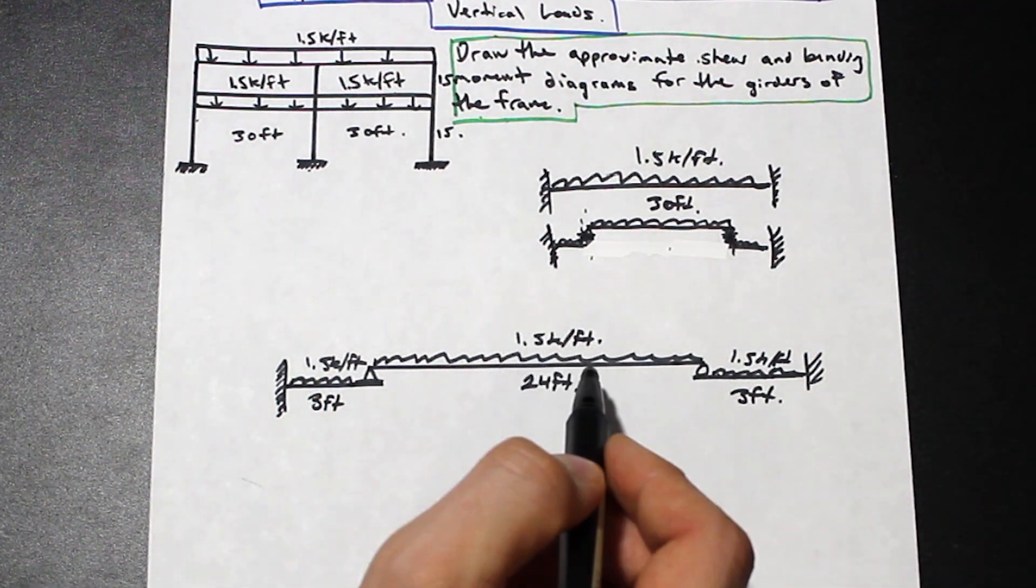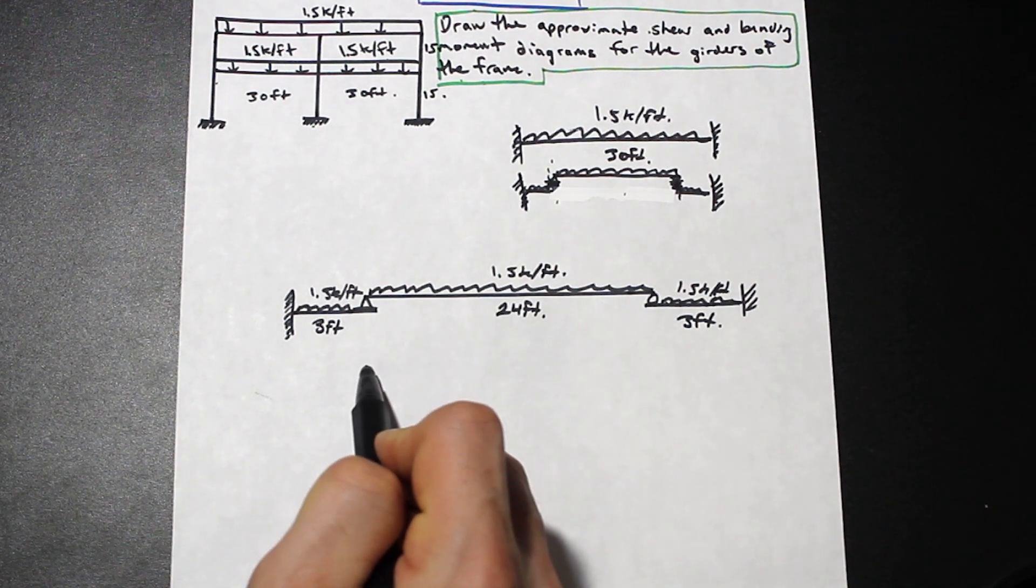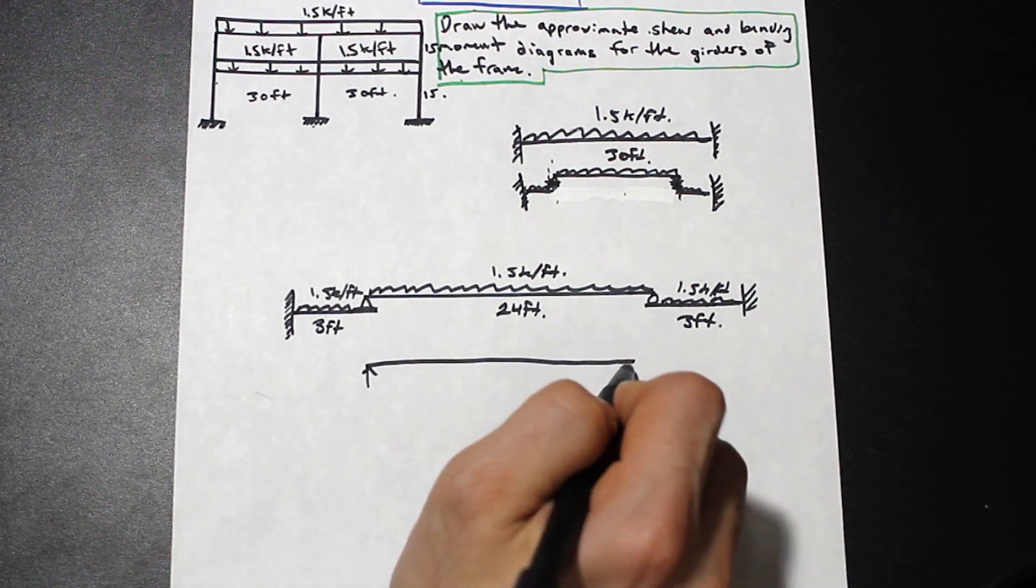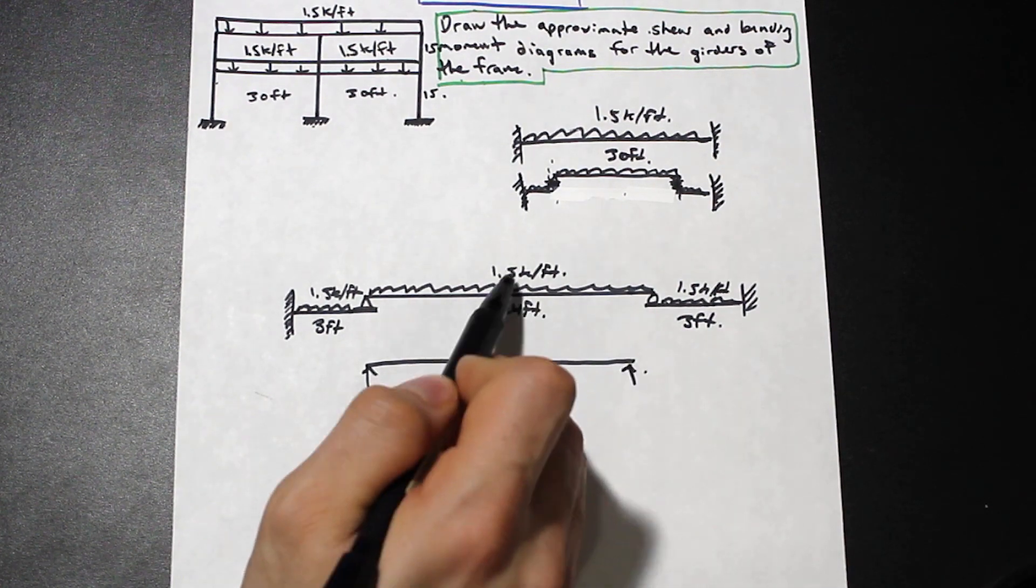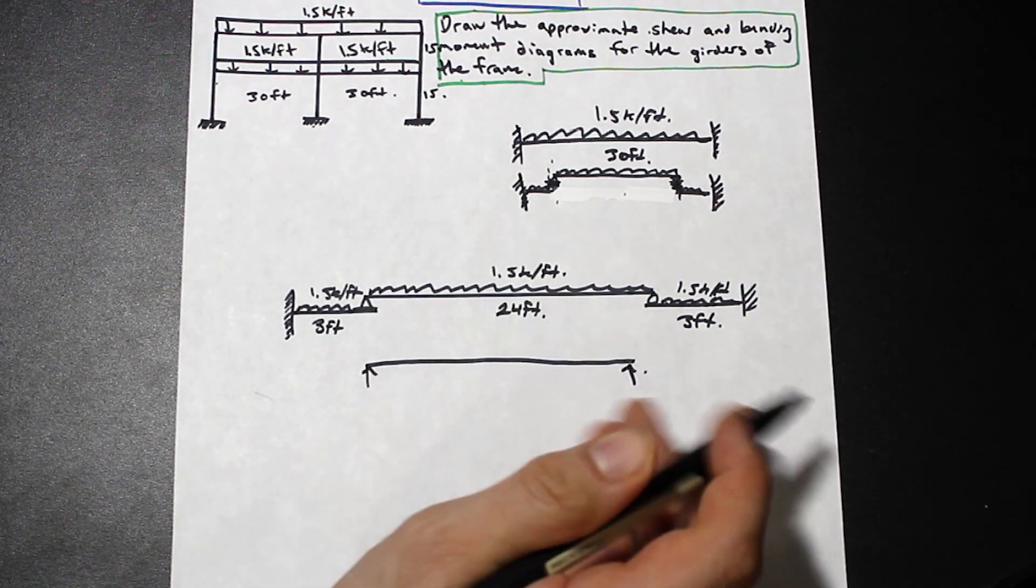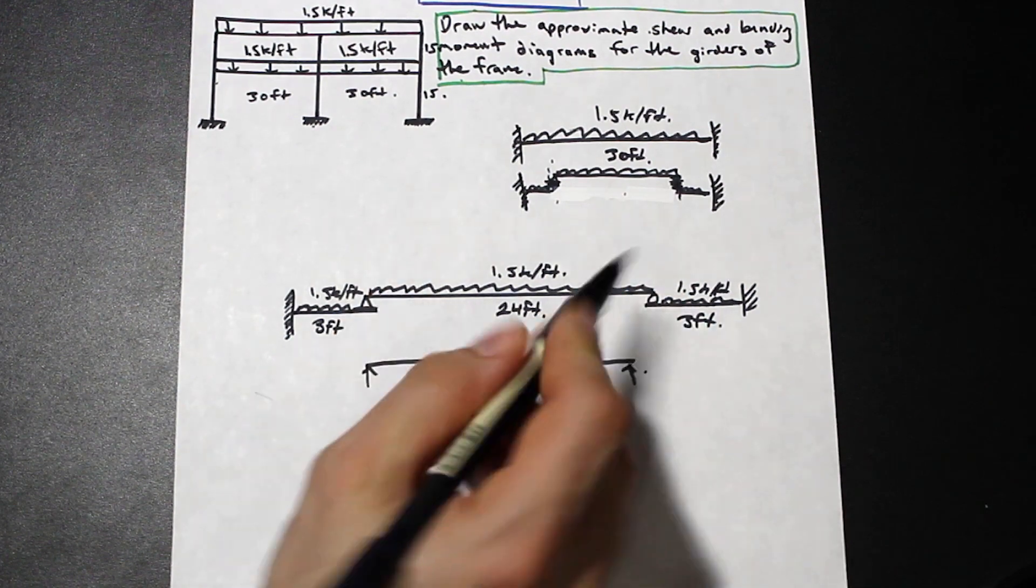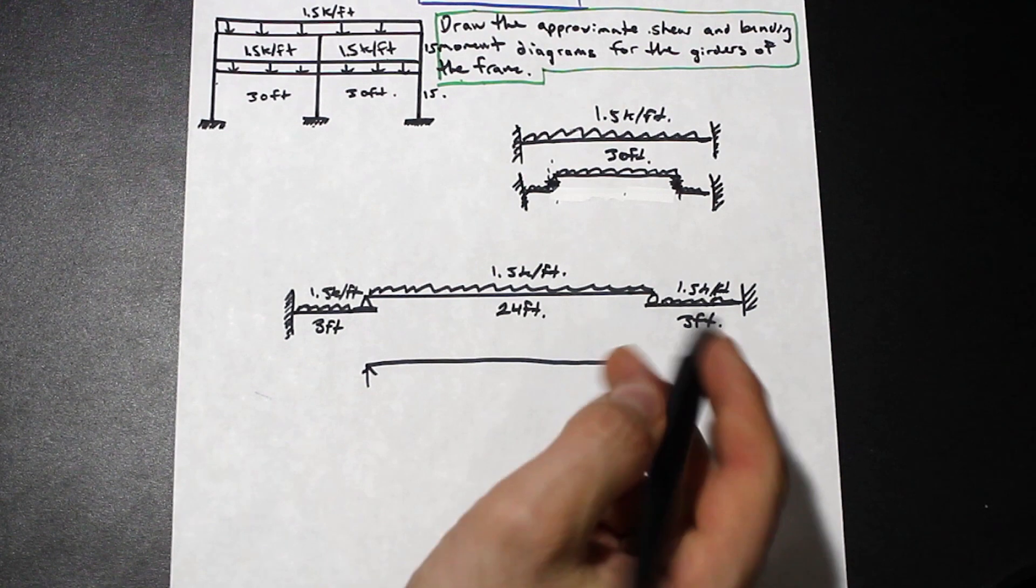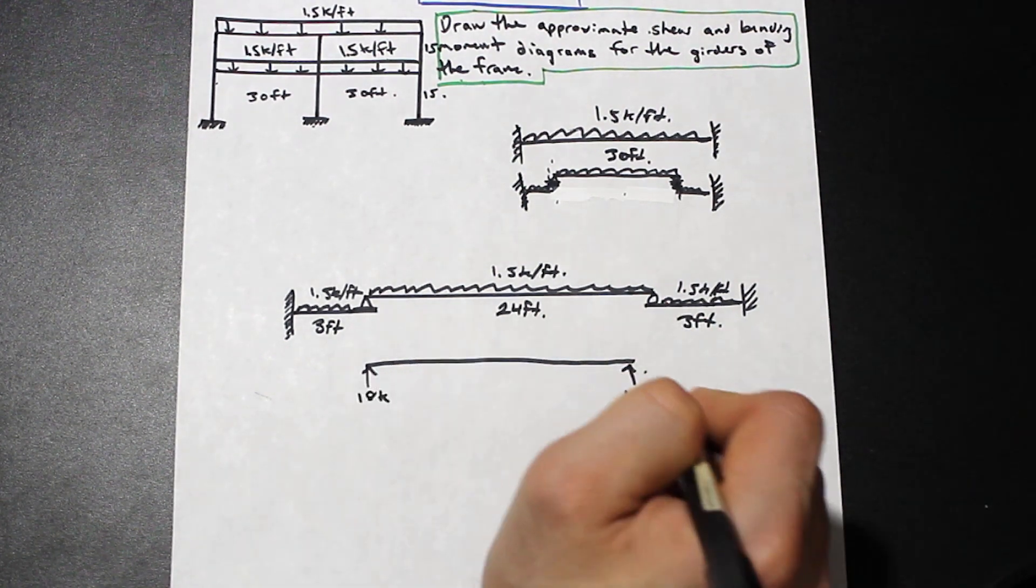So we have this simply supported beam here, right? So what I like to do here is I like to just take this and let's find the reactions here. So what are the reactions? Well, we have 24 times 1.5 divided by 2, because it's just a uniformly distributed load. So reactions are going to take half of the load. And we're simply going to get 18 kip on each side.